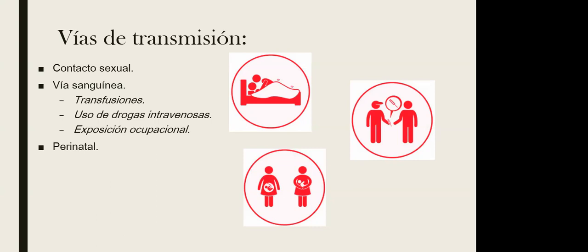Hay modelos que dividen: el modelo 1 incluye personas con relaciones sexuales con el mismo sexo y el modelo 2 con el sexo opuesto. Sin embargo, en África la relación entre infecciones en homosexuales y heterosexuales ya es 1 a 1, y en algunas zonas de Asia es más frecuente en heterosexuales. Básicamente el contacto sexual es riesgoso sin importar el sexo.